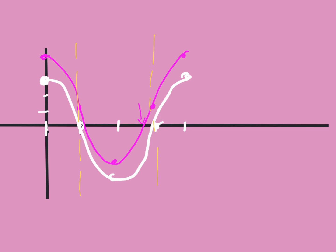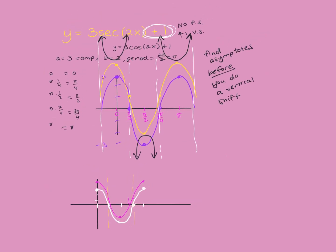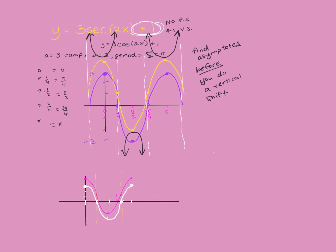When dealing with reciprocal functions, find the asymptotes before you do a vertical shift. If you shift first, you won't know where the original x-intercepts were. The asymptotes must go through where the original x-intercepts were — where the trig function equals zero — because even after adding the vertical shift, those angles are still undefined.